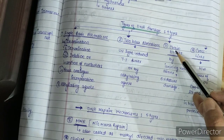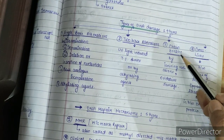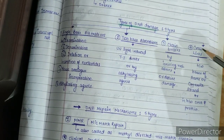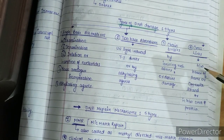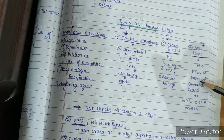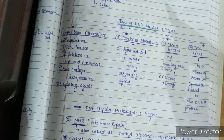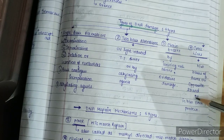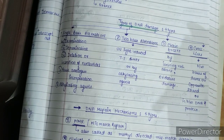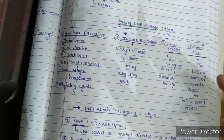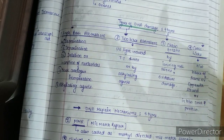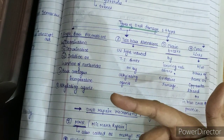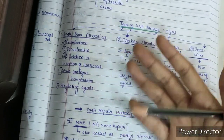The third type of DNA damage is chain breaks, which may be caused by ionizing radiation or oxidative damage. The fourth type is crosslink formations — these may occur between bases of the same strand or of opposite strands, or between DNA and protein. So, to summarize, the 4 types of DNA damage are: single base alterations, 2-base alterations, chain breaks, and crosslinks.